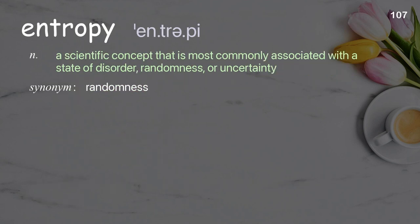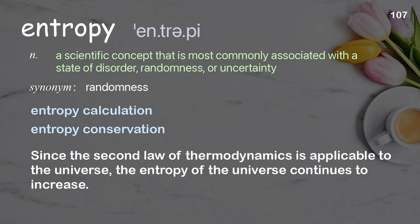Entropy: a scientific concept most commonly associated with a state of disorder, randomness, or uncertainty. Examples: entropy calculation, entropy conservation. Since the second law of thermodynamics is applicable to the universe, the entropy of the universe continues to increase.